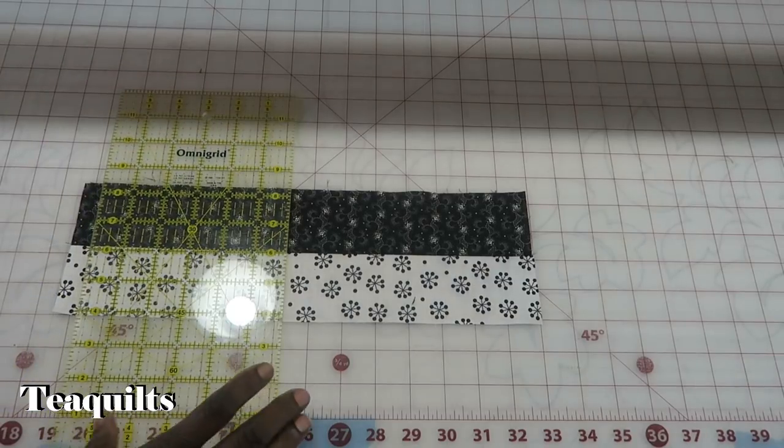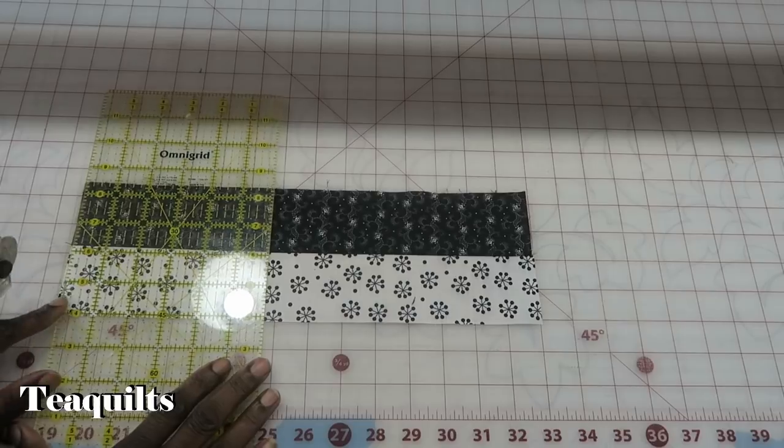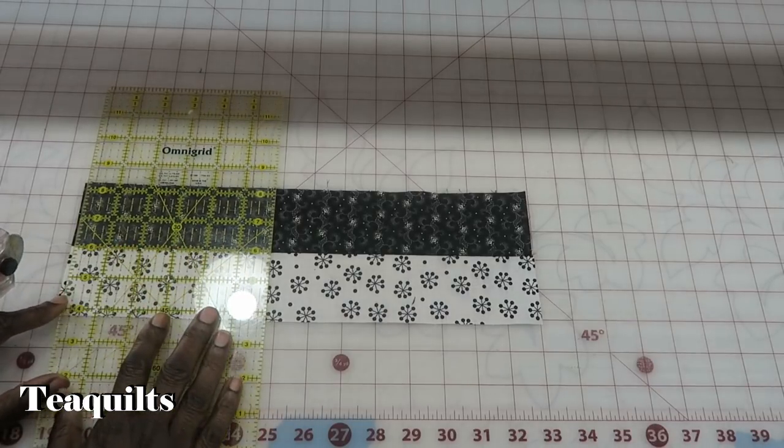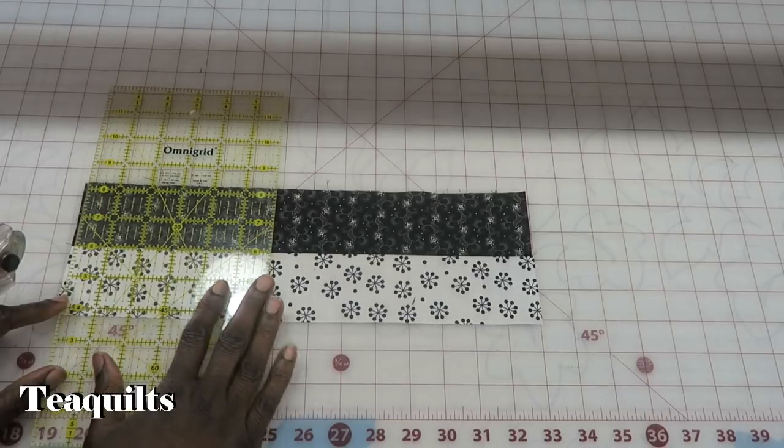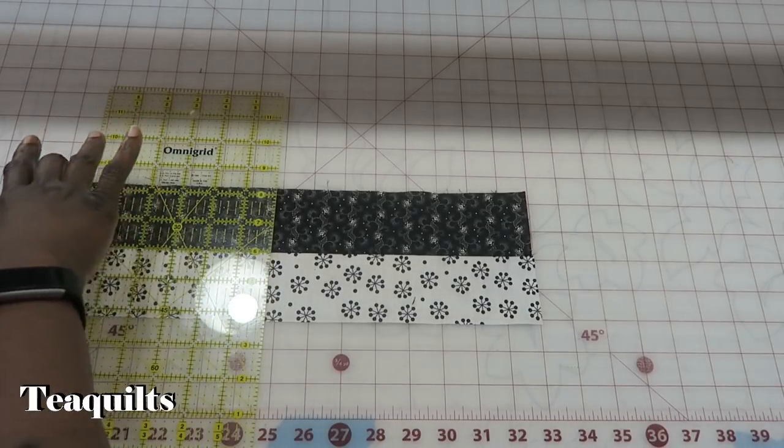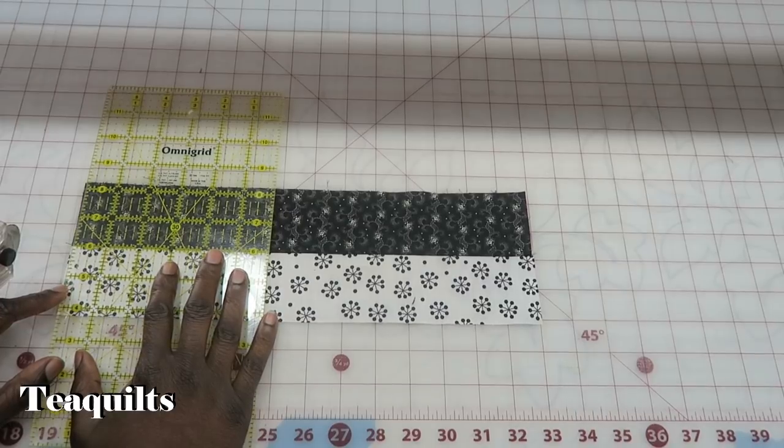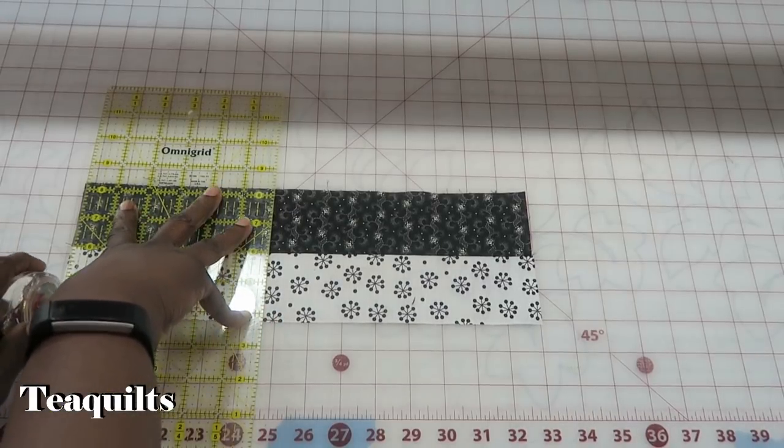So I want to first square up an edge and all I'm going to do is just place a line on the ruler, any line as long as it's covering my entire piece of fabric, and I'm just going to use that seam line to make sure that I am cutting square.